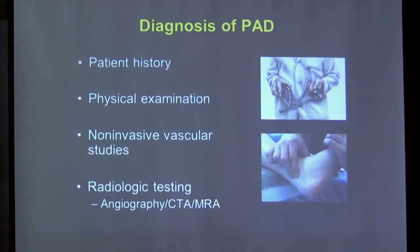Diagnosis relies first on clinical history and physical examination, which provide most of the essential information. Beyond that, non-invasive vascular studies — primarily ultrasound and the ankle-brachial index (ABI) — are performed. Further workup includes radiologic imaging: angiograms, CT scans, or MRIs to visualize blockages throughout the body.